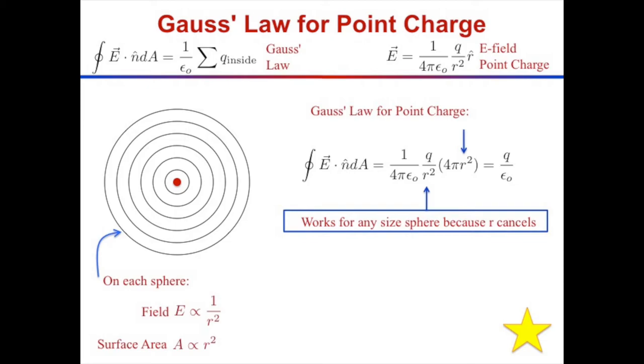This works for any size sphere - small, smaller, or larger - because as the field falls off like 1 over r squared, the surface area grows like r squared, and they exactly cancel.